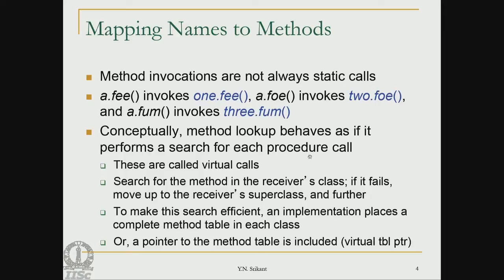There are visibility rules and naming conventions. Mapping names to methods means finding out which particular method a name corresponds to. If we say we are calling a dot phi, does it correspond to 1 dot phi, 2 dot phi, or 3 dot phi? When object a belongs to class 1, it would be 1 dot phi. If the call was made from an object of class 2, it would be 2 dot phi, and from class 3 it would be 3 dot phi.